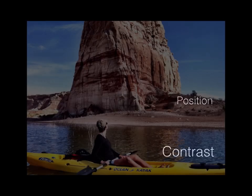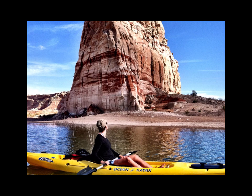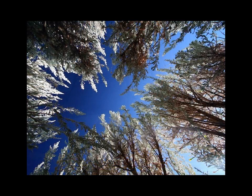Position — where things are and how they may be compared to each other — gives us contrast, gives us scope and scale. This huge monolith in Warm Springs Bay on Lake Powell, compared to my kayaking companion in the foreground. Position of where we experience the photograph or the sculpture or the architecture comes into place, especially architecture in terms of how we interface within it.